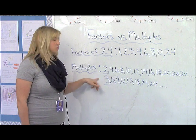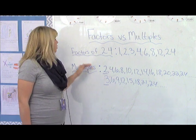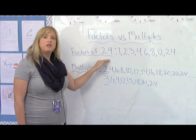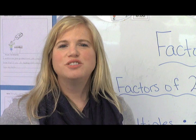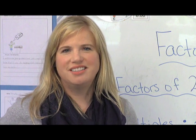So when you think of multiples of a number, think of skip counting. When you think of factors of a number, think of all the numbers that can go into it evenly without a remainder. And those are the differences between factors and multiples.